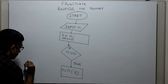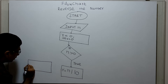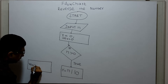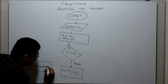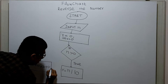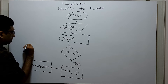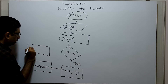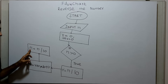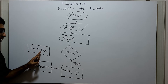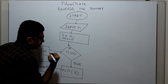Now I am calculating the reverse — it is a logical part. REV equal to REV multiplied by 10 plus the value in variable R. Next, I am performing an integer division: n equal to n divided by 10. The fractional part will get omitted. I am joining it back to the relation statement.